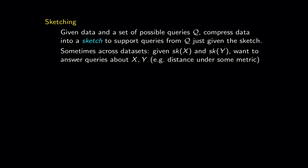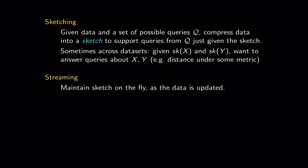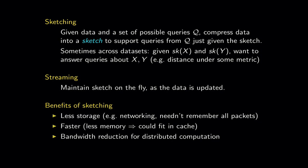Streaming is like dynamic data structures: the data is being updated on the fly and you maintain your sketch in this streaming fashion as the data is updated, again using sublinear memory. Benefits include less storage — important for applications like running on a router without remembering every packet — potentially faster since data fits in cache, and applications in distributed computation where nodes only need to communicate their sketches rather than their full datasets, minimizing communication.